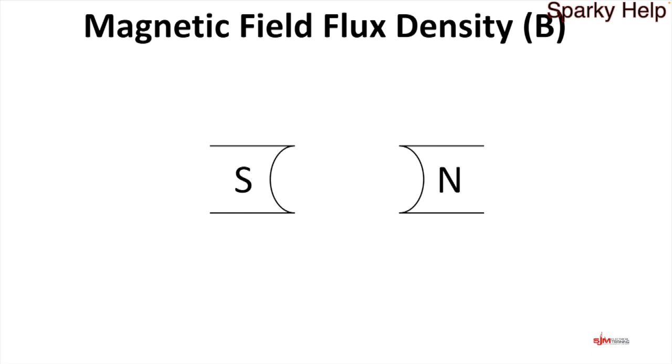If we swap the poles around, the flux lines will travel the opposite direction in the straightest possible line between the north and the south.